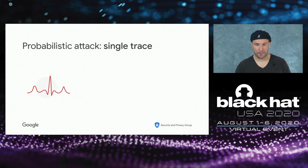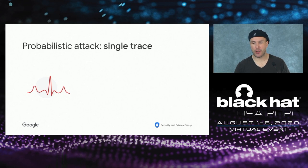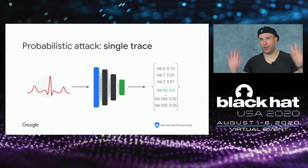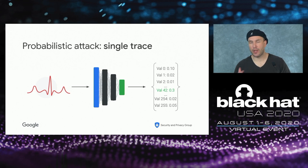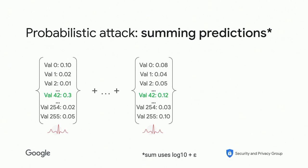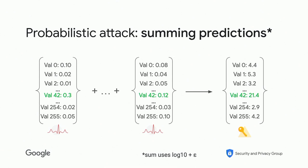One nice thing about deep learning-based SCA is that you get a probability distribution — a softmax output — telling you for each value of the intermediate what the probability is, or how strongly the model believes each is the correct prediction. This gives rise to a natural probabilistic attack where you sum predictions using log plus epsilon, accumulate probabilities, and rank your guesses. That's also one of the key benefits of using deep learning-based SCAAML.